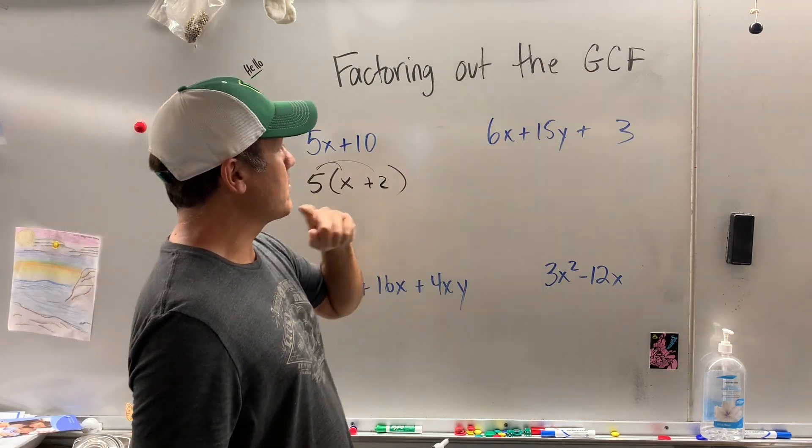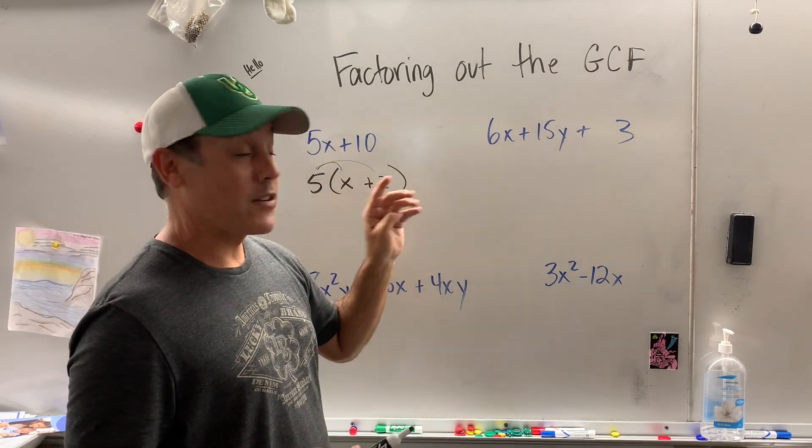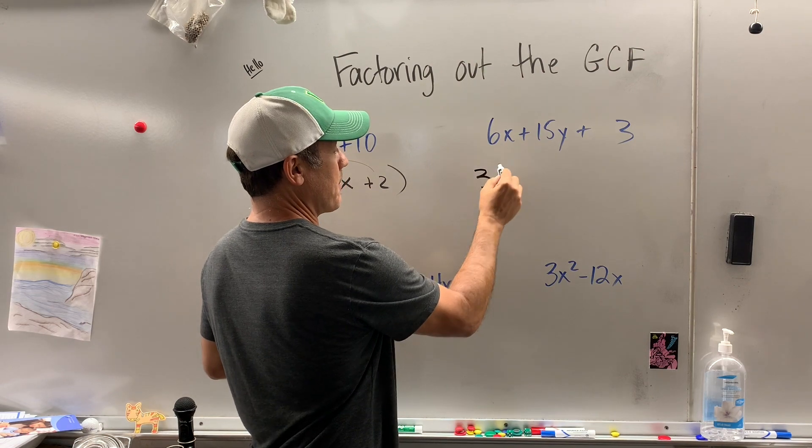5x plus 10, bingo. So over here, ooh, this one looks rough. There's 3 terms, so now you need a factor and or a letter that goes into all 3 terms. So 3 is the only thing I can see, so I pull out that 3.